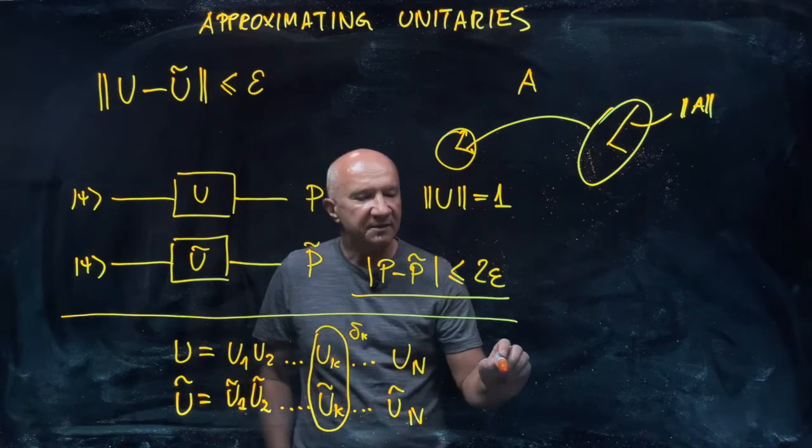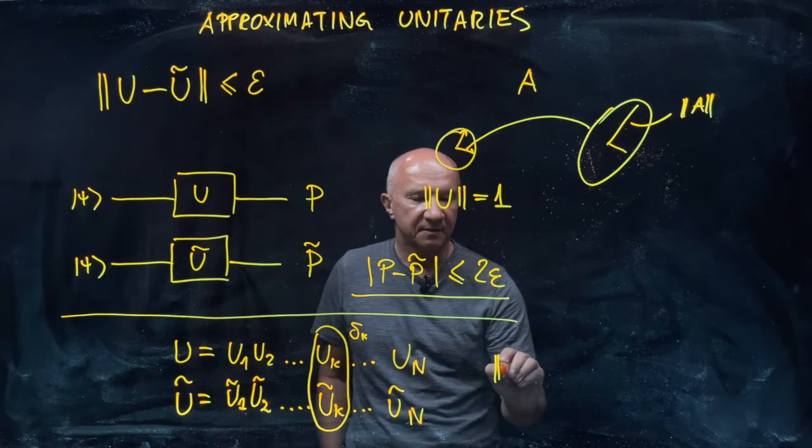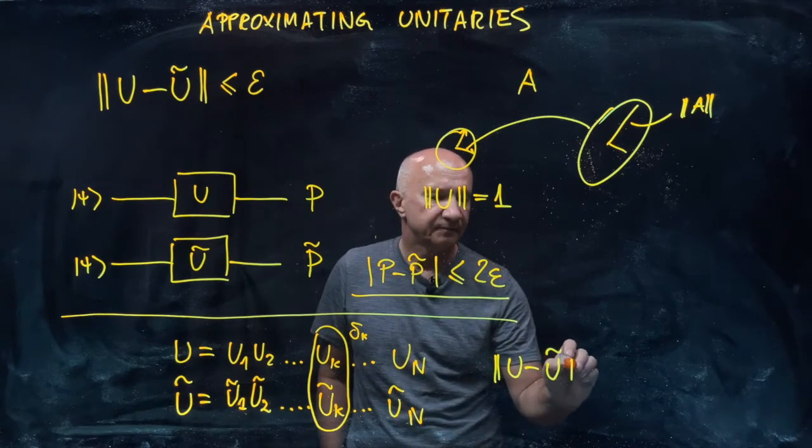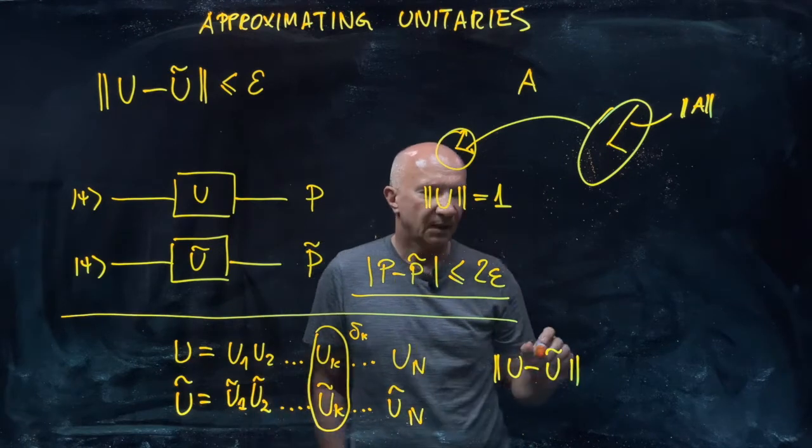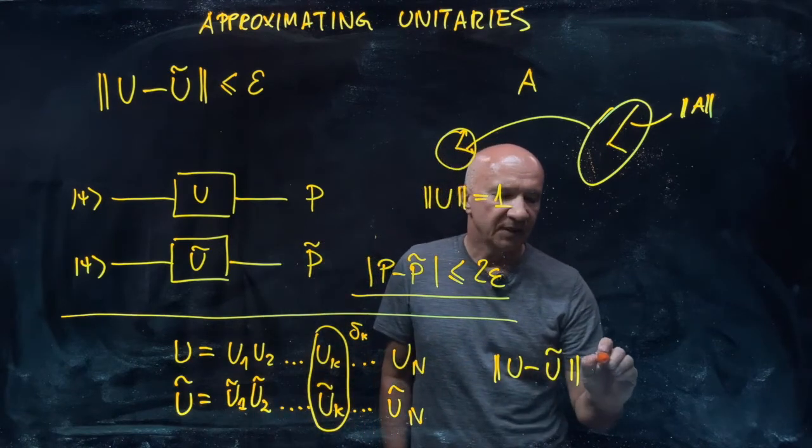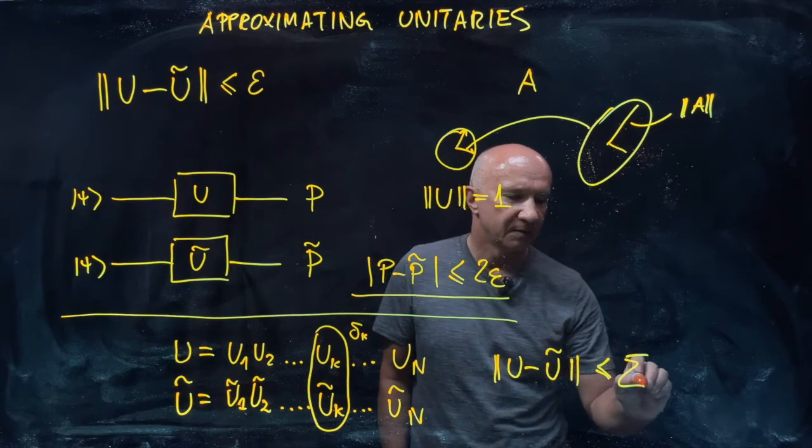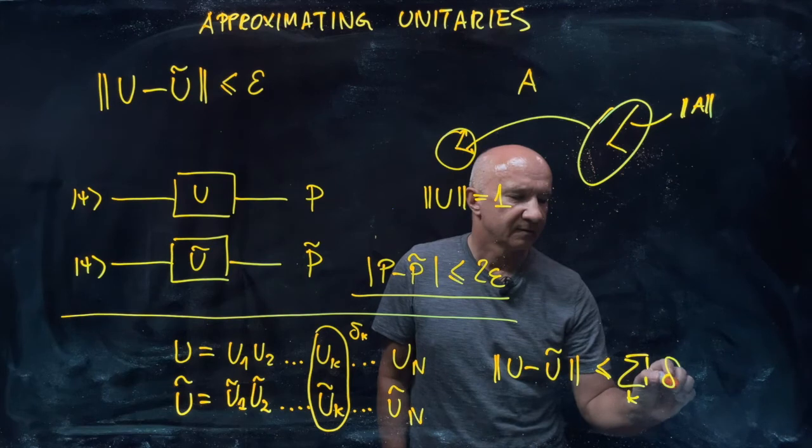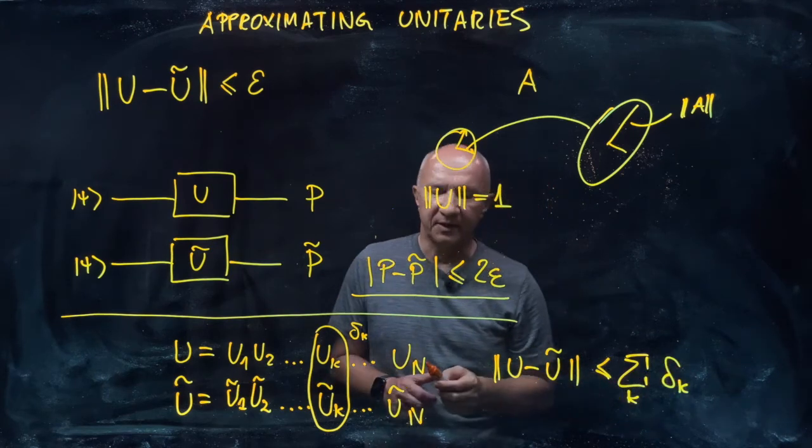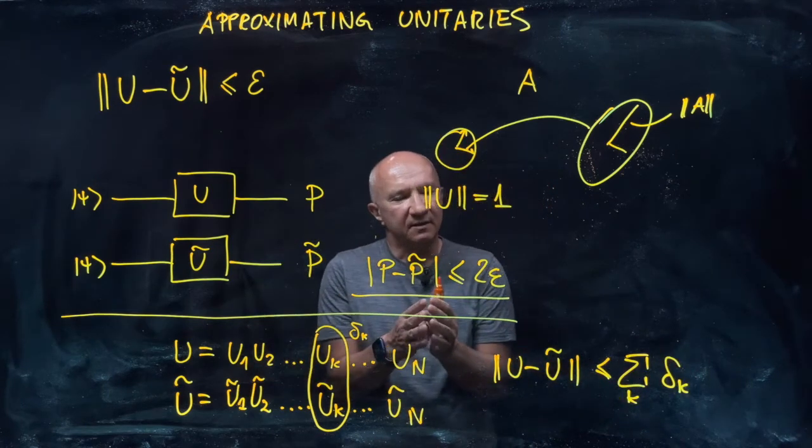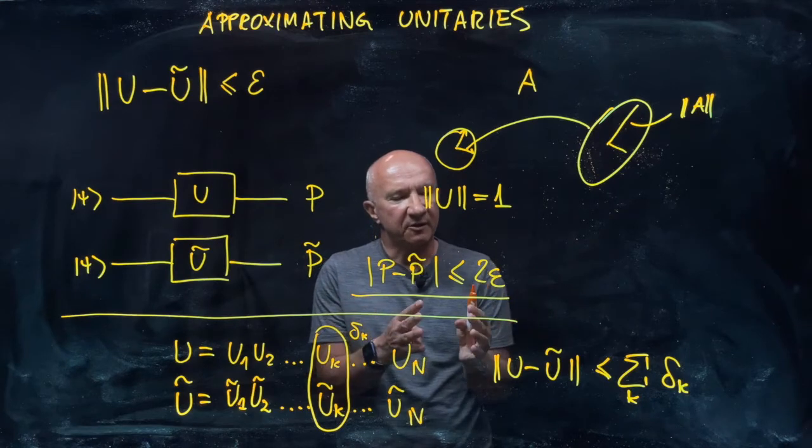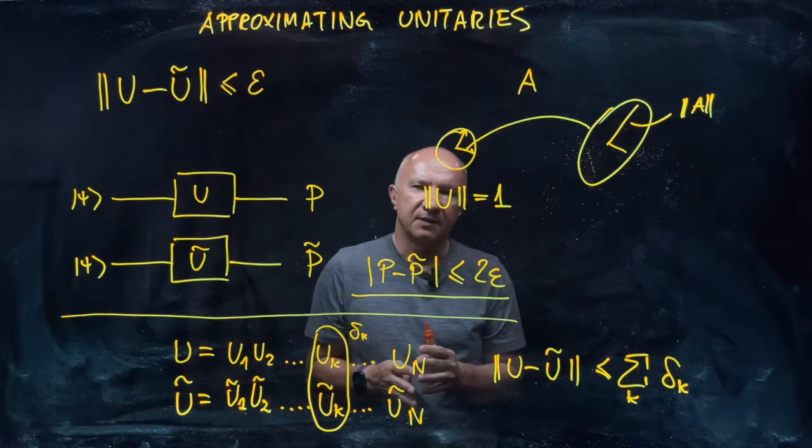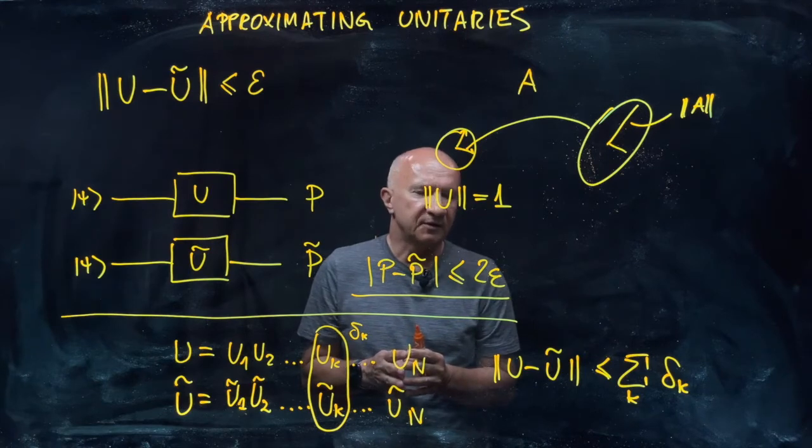So then we can show that the distance between u and u tilde is bounded by the sum over k delta sub k. So you see the error in our approximation only grows linearly with the number of approximating unitaries that we have.